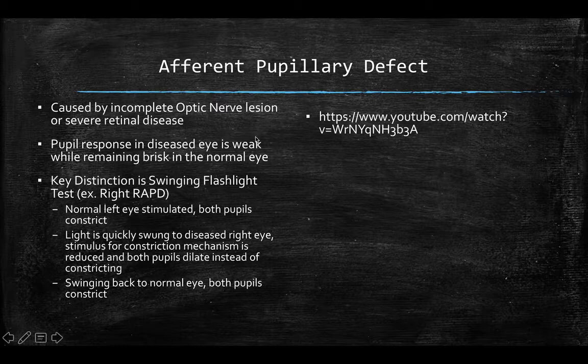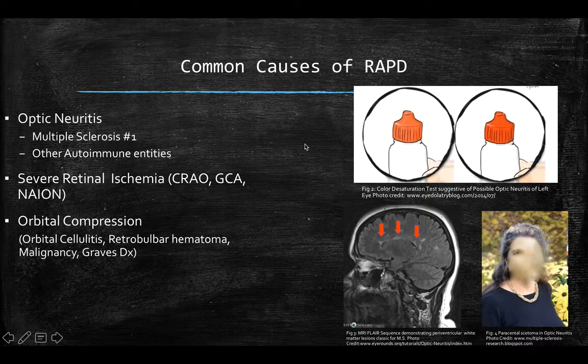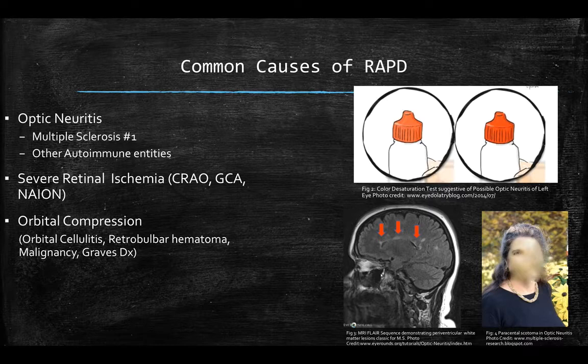Now that we understand what a relative afferent pupillary defect looks like, let's talk about a few causes of RAPDs. The number one thing to think of in ophthalmology is optic neuritis. The number one cause of optic neuritis is multiple sclerosis — an autoimmune demyelinating disease where patients many times will come in with optic neuritis as the initial presenting sign of multiple sclerosis.